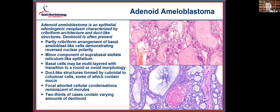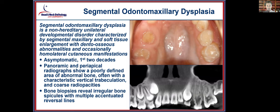Adenoid ameloblastoma is a new ameloblastoma category that is partly cribriform in its architectural arrangement, showing reverse polarization with only a minor component of stellate reticulum. The basal cells are frequently multilayered, transitioning to round or ovoid morphology with duct-like structures. About two-thirds of cases will show some dentinoid-type material.